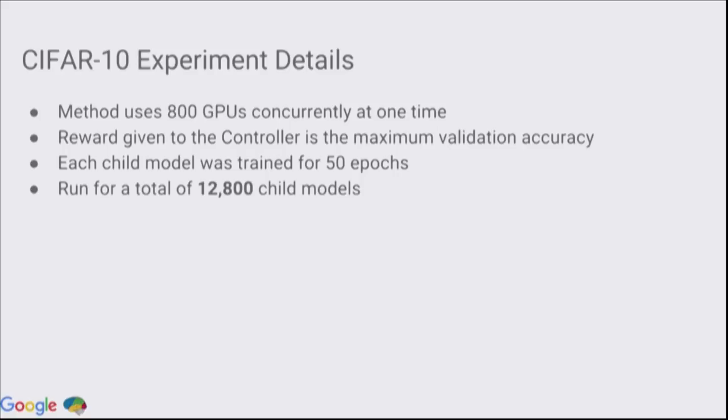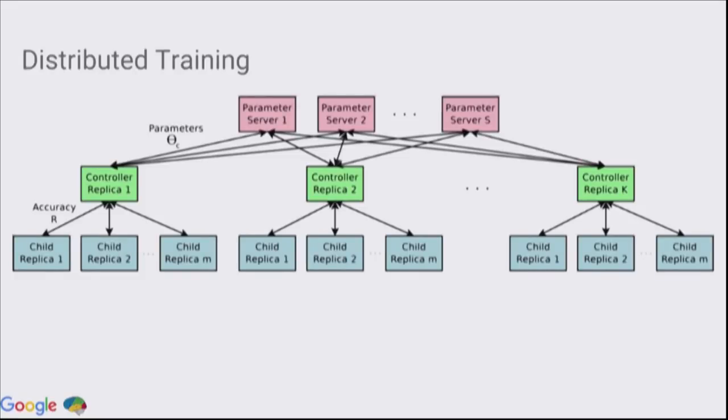We conducted a massive experiment on this. We used 800 GPUs concurrently at one time. Each trained network was trained 50 epochs, and the total number of models that we trained was 12,000 trained models. In our system, because we run 800 GPUs concurrently, we break it down into multiple replicas. The replicas will communicate to a parameter server for the controller so that the controller can asynchronously update the parameters so that it can sample better architectures over time.